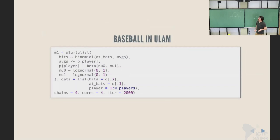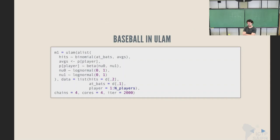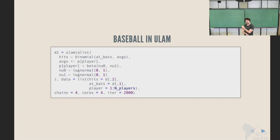We can see this model in Ulam — it's the same as a normal binomial model. We have the binomial likelihood with the number of times a player attempted a hit and the number of hits achieved. The average here is the vector of batting averages, estimated using the beta distribution as a prior. We can use a lot of distributions at this level — I'm using beta here because the parameter I want to estimate varies between zero and one. I could also have set up a logit link and used the normal distribution, which would have worked too.